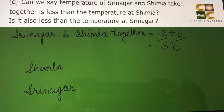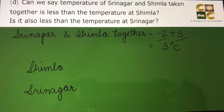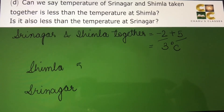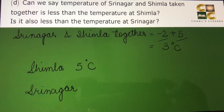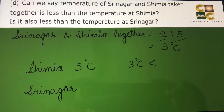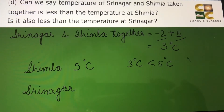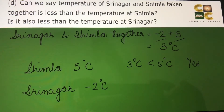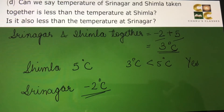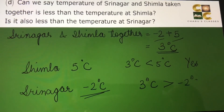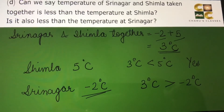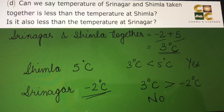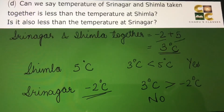Now we compare this with Shimla and Srinagar. The temperature of Shimla is 5 degrees Celsius. Is 3 degrees Celsius less than 5 degrees Celsius? Yes — so for the first part, yes it is less than the temperature at Shimla. Is it also less than the temperature at Srinagar, which is minus 2 degrees Celsius? Comparing 3 degrees Celsius with minus 2 degrees Celsius, 3 is greater than minus 2, so no — the combined temperature is not less than the temperature at Srinagar.